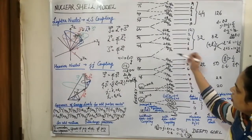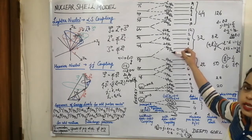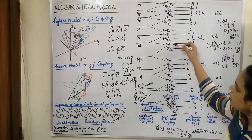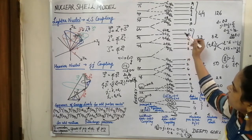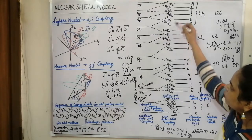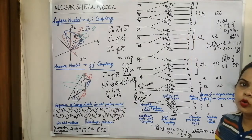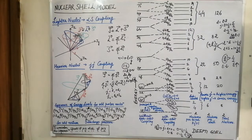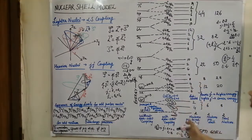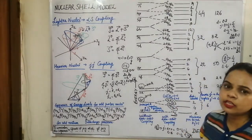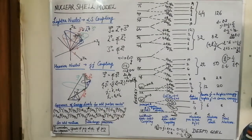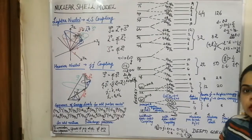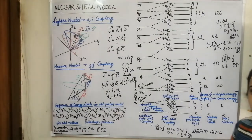G splits into 9/2 and 7/2 states, D again splits into 5/2 and 3/2. We can show the complete splitting of levels when we take the spin-orbit coupling into account.